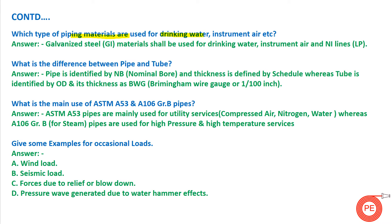The next question is: which type of piping material is used for drinking water, instrument air, and nitrogen lines? Drinking water has statutory compliance requirements, and instrument air is critical because clogging can stop instruments from working. For these services, galvanized iron is used, because in galvanized iron there are no chances of pipe erosion or foreign particles entering. So galvanized pipes are used for drinking water, instrument air, and nitrogen lines.